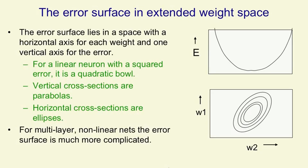This is only true for linear systems with a squared error. As soon as we go to multilayer nonlinear neural nets, this error surface will get more complicated. As long as the weights aren't too big, the error surface will still be smooth, but it may have many local minima.